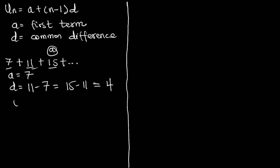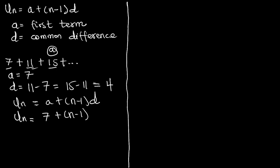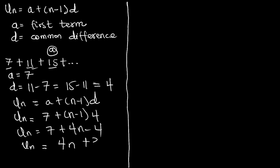We know that the nth term u sub n is equal to a plus n minus 1 times d. So u sub n equals 7 plus n minus 1 times 4. When we simplify this we get 7 plus 4n minus 4, and the nth term is going to be 4n plus 3. So this is the nth term of this series.